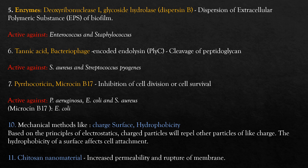The fifth group includes enzymes such as Deoxyribonuclease 1 and Glycoside Hydrolase, that is Dispersin B. The mechanism is dispersion of the extracellular polymeric substance of the biofilm — essentially dispersing the EPS. These are active against Enterococcus and Staphylococcus.